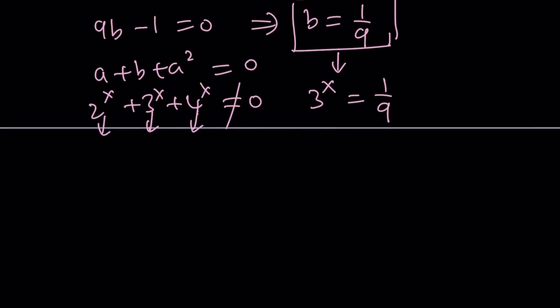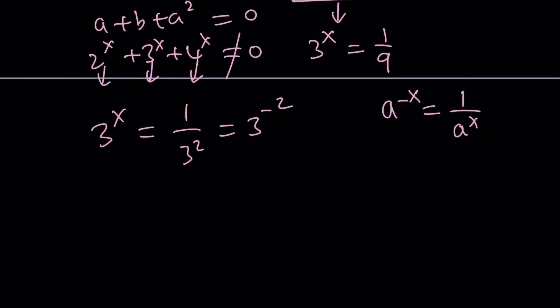b is 3 to the power x so 3 to the power x equals 1 ninth is going to give us the solution. Now 1 ninth can be written as 1 over 3 squared and that is 3 to the power negative 2 using the rules of negative exponents. Now we got a very simple equation right? And then from here x becomes negative 2 and that is the only solution because if you look at the other factor it can never be 0 so this is the only solution.